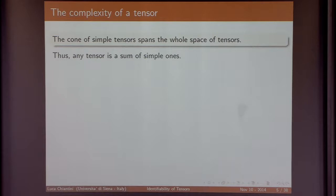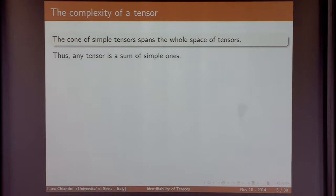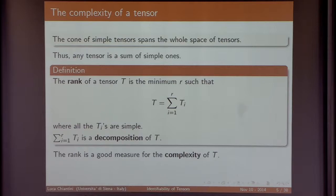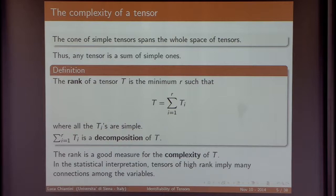The set of simple tensors is a cone, but it is not a subspace — and this is exactly where all the story starts. It spans the whole space of tensors, so everything can be written as a sum of simple tensors. This is the definition of rank that we saw in the previous talk. I will use the word 'decomposition' to indicate both the sum and every such sum. The rank is a way to measure the complexity of a tensor: high rank implies many connections among the variables.